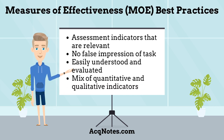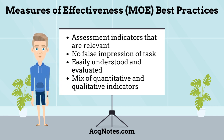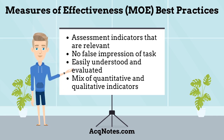What are the best practices for developing measures of effectiveness? Measures of effectiveness should use assessment indicators that are relevant, measurable, responsive, and resourced so there is no false impression of task or objective accomplishment. They should be easily understood and evaluated. Complicated measures of effectiveness are more difficult to evaluate and can lead to confusion and a lack of understanding of the real issue. A mix of quantitative and qualitative indicators is used to evaluate them to mitigate the risk of misinterpretation and overcome the limits of raw data in understanding complex situations.